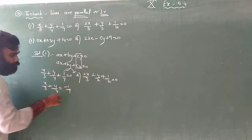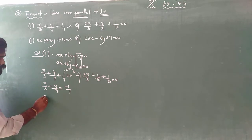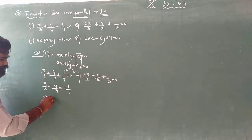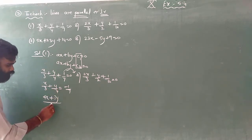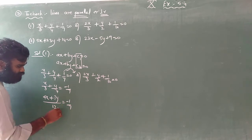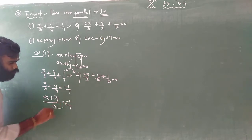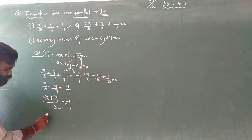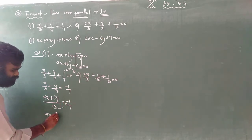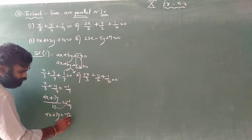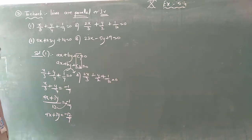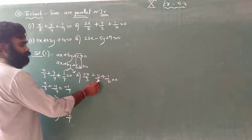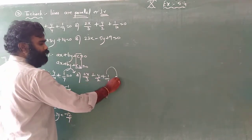For the first equation, move the constant: x by 3 plus y by 4 is equal to minus 1 by 7. Cross multiply: 4 into x is 4x, 3 into y is 3y, and 3 times 4 is 12. So 4x plus 3y equals minus 12 by 7.